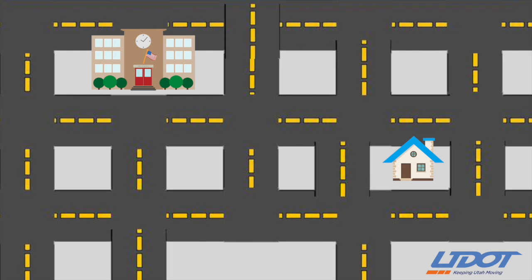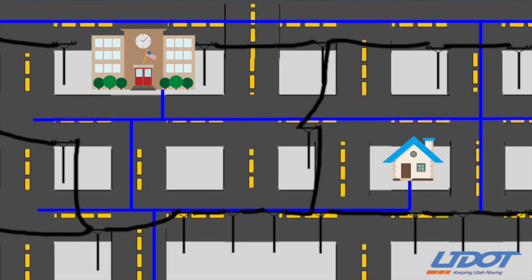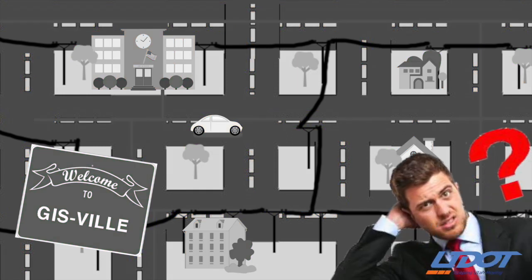GIS is a way to take locations of, say, your school or your house, and the roads connecting your school and house, and maybe the water lines, power lines. So Google Maps — that's a really good example of GIS.